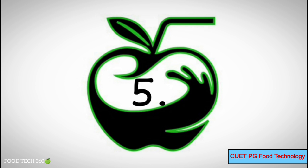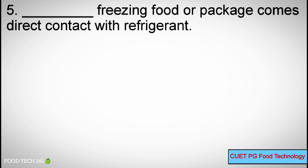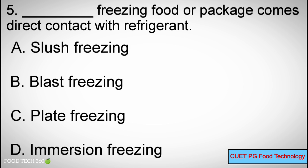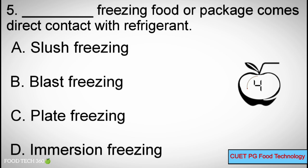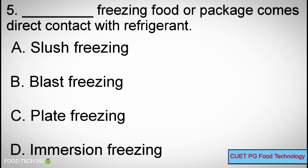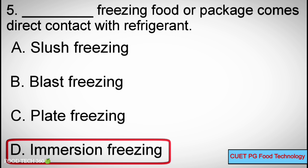Q5: _____ freezing — food or package comes into direct contact with refrigerant. A. Smash freezing, B. Blast freezing, C. Plate freezing, D. Immersion freezing. Correct answer: D. Immersion freezing.